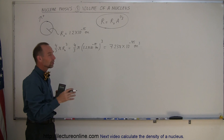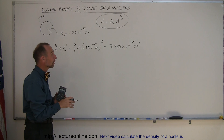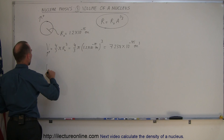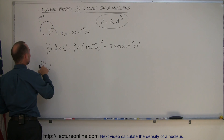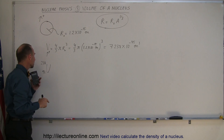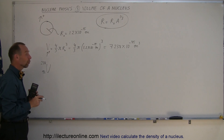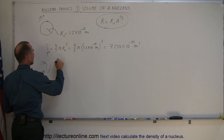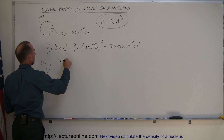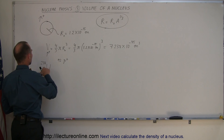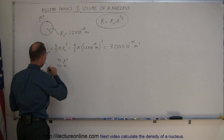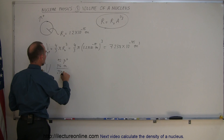A is the number of nuclear particles in the nucleus — the number of nucleons — which means the number of neutrons and protons. So let's say we have uranium-238. Uranium-238 has 92 protons, and therefore 238 minus 92, which is 146 neutrons — a total of 238 nucleons.